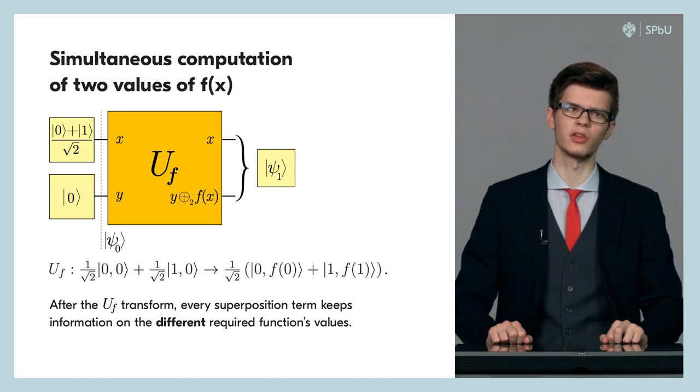Since every transform in U_f is a linear operator, the U_f is a linear operator itself, which acts on every term of data register separately. Thus, at the output we have an equiprobable superposition. Every term in the superposition is a tensor product of a state corresponding to a certain value of the argument x and the state corresponding to a value of f of this argument. If we go through all possible values of x at the input, we'll obtain all possible values of f at the output. Each term of the superposition we would get will go with the same probability amplitude.